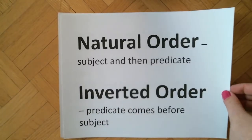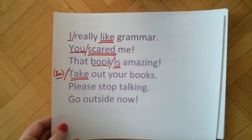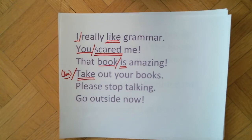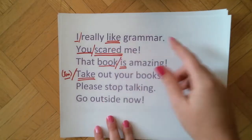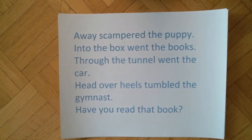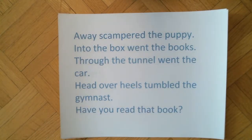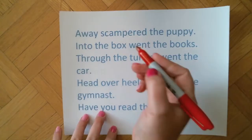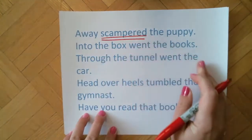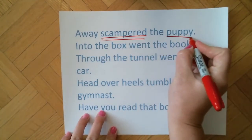Let's look at some examples. Previously we saw sentences like 'I really like grammar' and 'you scared me,' where the subject comes first and then the predicate. Now we'll see the opposite — inverted order sentences. Take 'Away scampered the puppy.' What's the verb? It's 'scampered.' And who scampered? The puppy scampered.